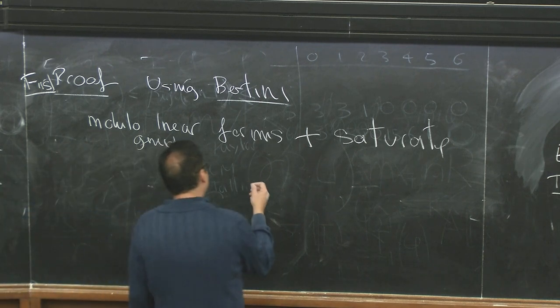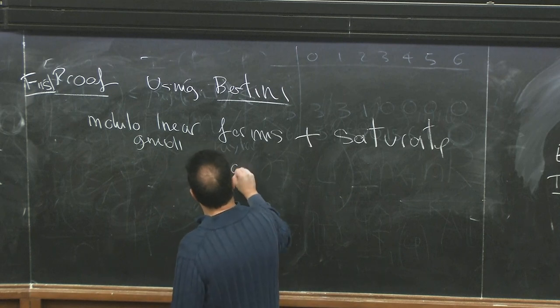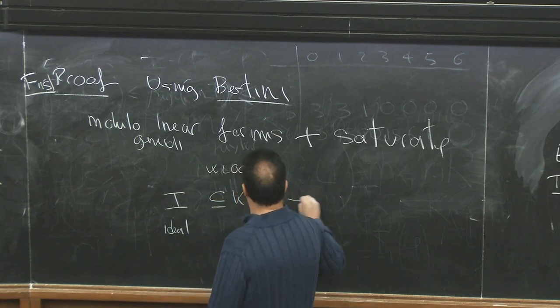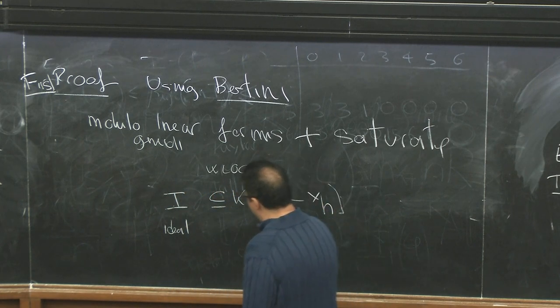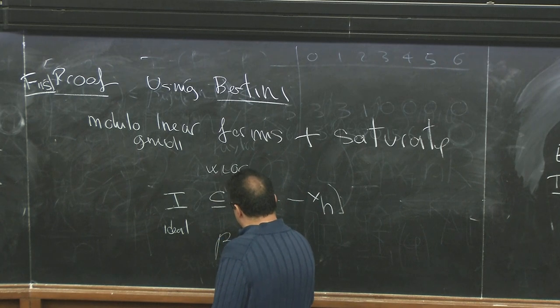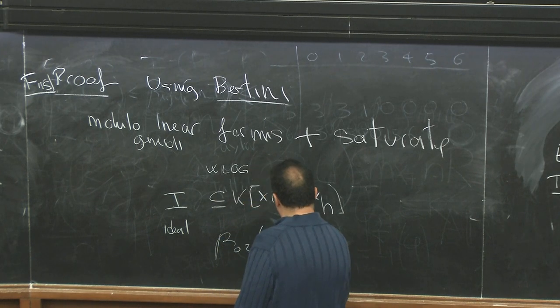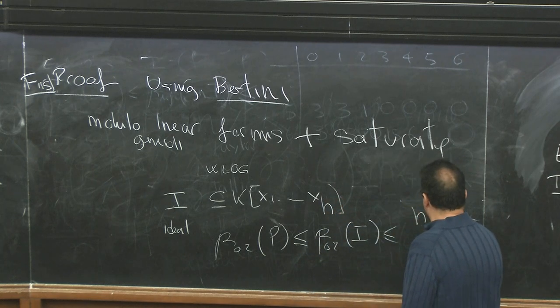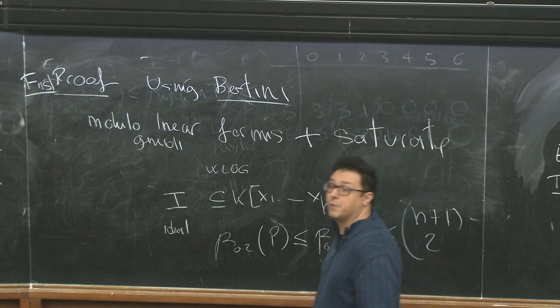And so the second Betti number of your prime is bounded above by the second Betti number of I, which is bounded above by h plus one over two, how many quadrics you have in that ring. The key point is that in this process the degree one part of I, without loss of generality, the prime in degree one was zero so it was non-degenerate, and you don't gain